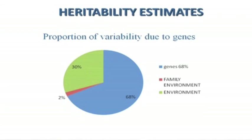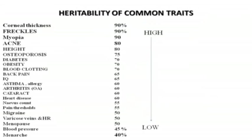We've done this now for hundreds of diseases and traits. At the top of the heritability list there's myopia, freckles, and corneal thickness — the thickness of your lens — which are all related to the eye. These are the highest, meaning 90% heritable, with hardly any environmental component. One reason they're very high is that they're quite easy to measure. It's easy to count freckles, measure lens thickness with eye instruments, and myopia is measured by optometrists who can send in prescriptions.